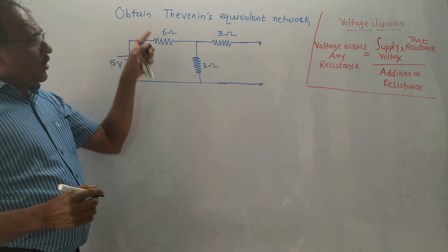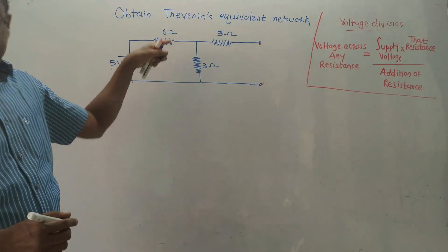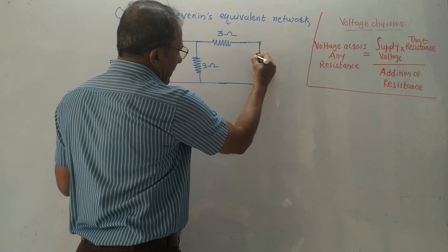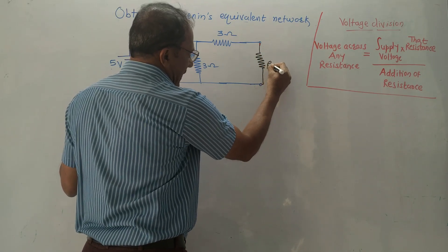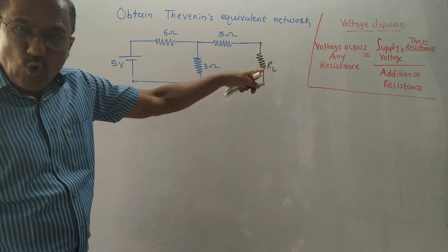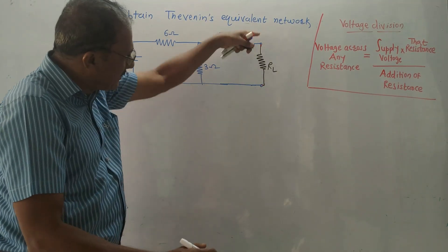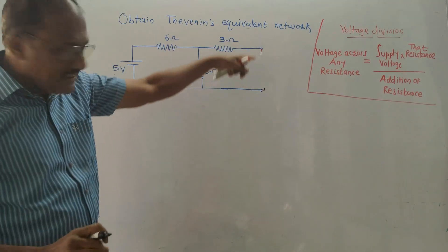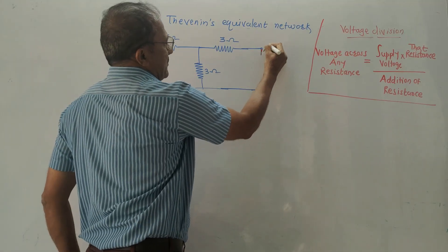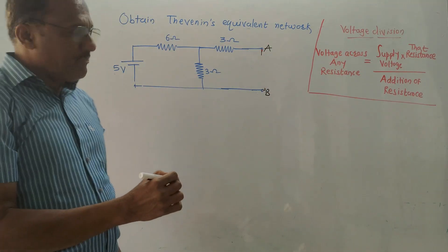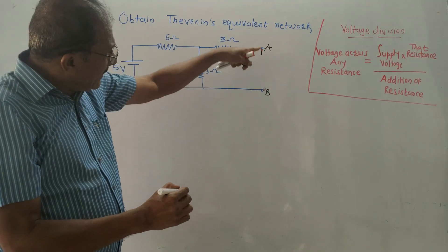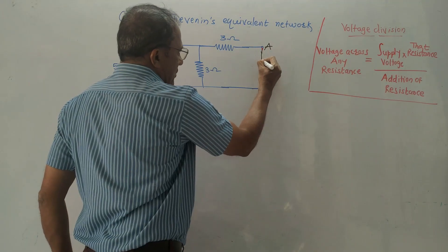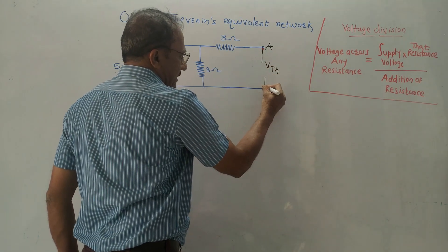The problem is: obtain Thevenin's equivalent network for the following circuit. In the given question, one resistance is mentioned as RL — it is called load resistance. First step would have been to remove this resistance and make it open circuit. The terminals are already open circuited, so I am just labelling them as A and B. We have to calculate the voltage between these open circuited points A and B, which is denoted by VTH — Thevenin's equivalent voltage.